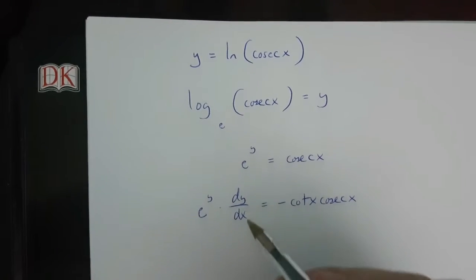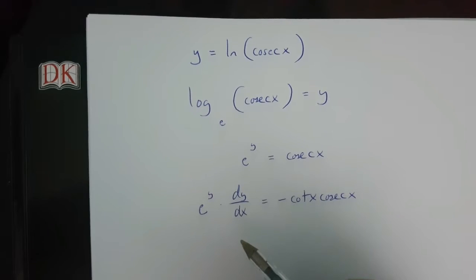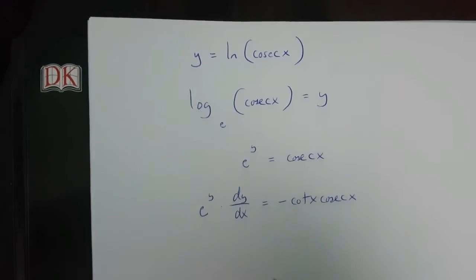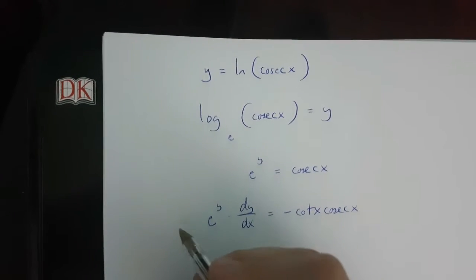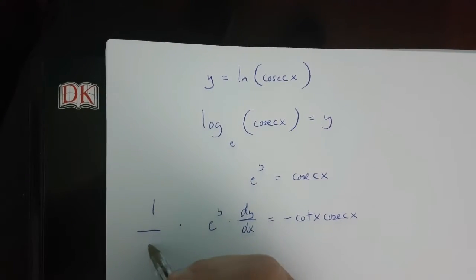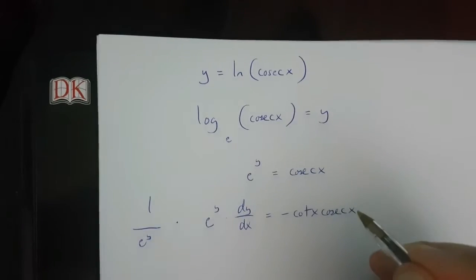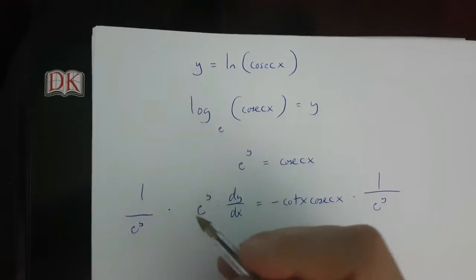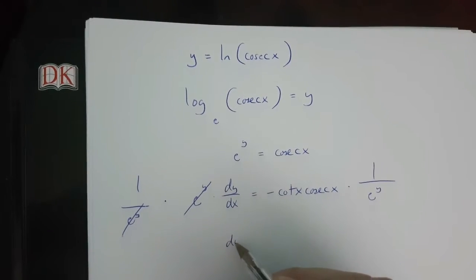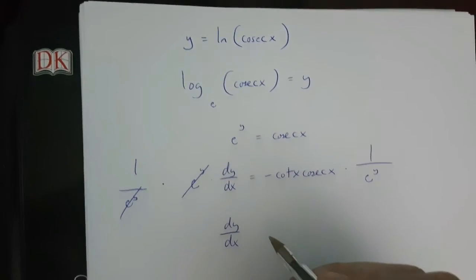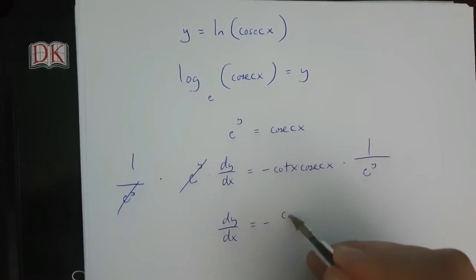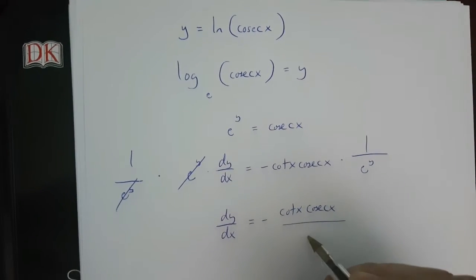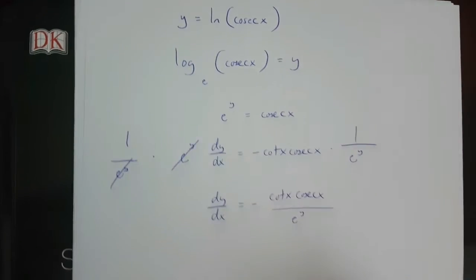To isolate dy over dx, I have to multiply both sides of this equation by 1 over e to the power of y. If I do this, I'll then get dy over dx is equal to minus cot x times cosec x over e to the power of y.